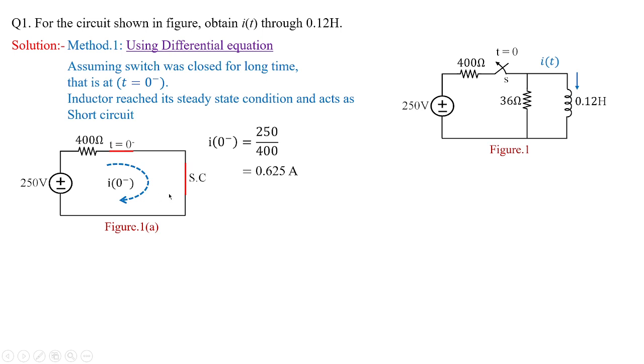Current through inductor cannot change instantaneously. So, the value of current after removal of the switch, that is i(0+), is same, that is 0.625 amperes. This is the first catch you should obtain by looking into the problem.